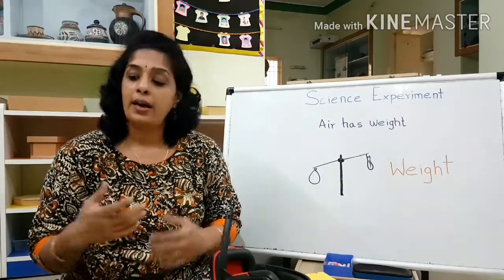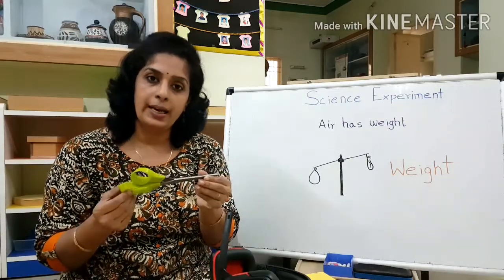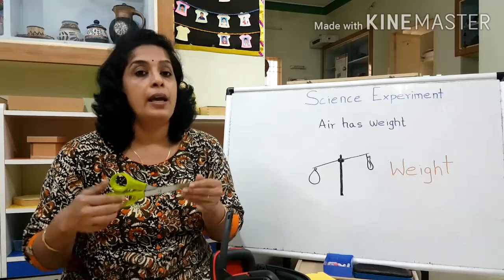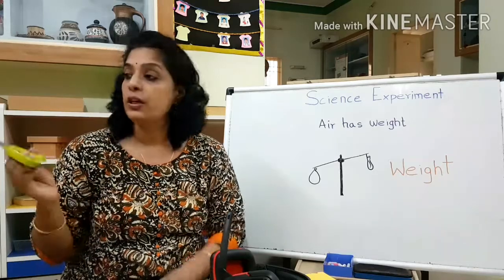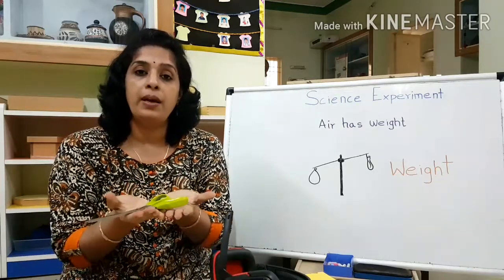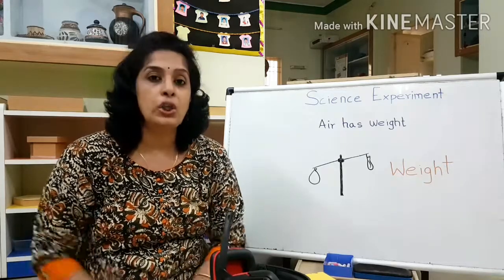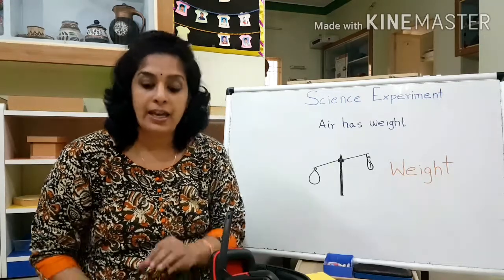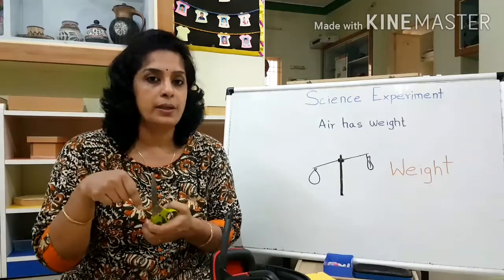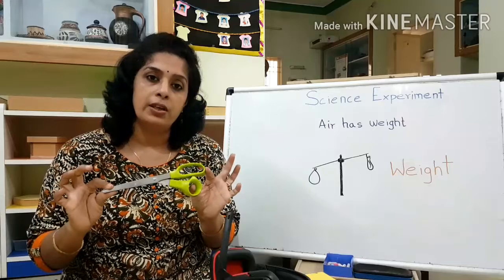Solid - anything that you can hold in your hand like this is a solid. I showed you the pink tower; anything that you can touch and hold in your hand firmly and stays in place is called a solid. It is very hard, you can't really poke into it.